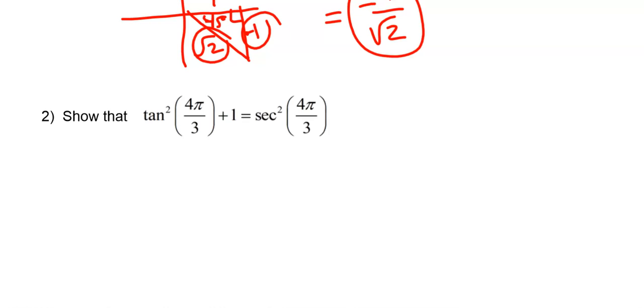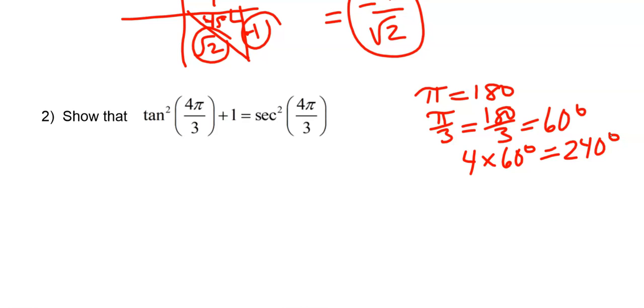So let's recall that pi equals 180. So pi over 3 would be 180 divided by 3, which is 60. And since I have 4 pi over 3, that would be 4 times 60, which is 240 degrees. So this is a 240 degree angle, which is in quadrant 3.